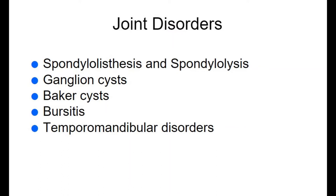Now we're delving into joint disorders, starting with spondylolisthesis and spondylosis, followed by ganglion cysts, Baker cysts, bursitis, and temporomandibular disorders. Let's define the terms: spondylosis is a general term for arthritic changes in the spine — joint degeneration, loss of joint space, sclerosis, disc bulging, and similar changes.